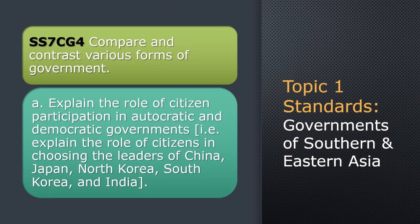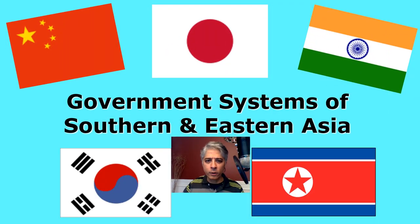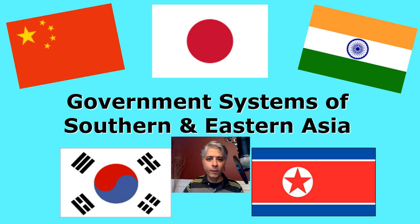Topic one: governments of southern and eastern Asia. Our standards are all tied to standard SS7CG4 — compare and contrast various forms of government, specific to element A. We're going to go over the notes you took for governments of southern and eastern Asia. Pause the video and go dig out that graphic organizer so we can go over your answers.